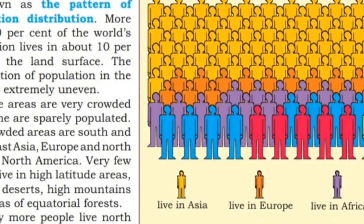Very few people live in high latitude areas, tropical deserts, high mountain areas, and equatorial forests. Many more people live north of the equator than south of it. Almost three quarters of the world's people live in two continents: Asia and Africa. Sixty percent of the world's people live in just ten countries, all of which have more than 100 million people.